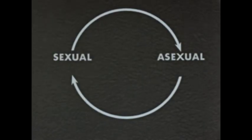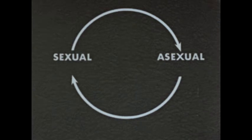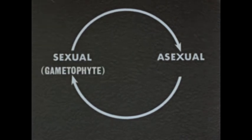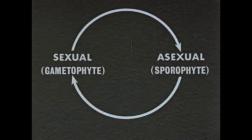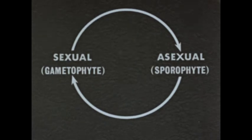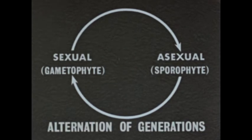Liverworts reproduce by sexual, then asexual means. The sexual stage, a multicellular gametophyte, has gametes, or sex cells. The asexual stage, a multicellular sporophyte, has spores. Alternation between sexual and asexual reproduction — between gametophyte and sporophyte — is called alternation of generations.